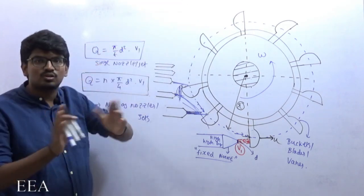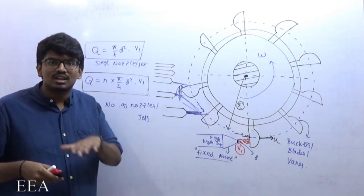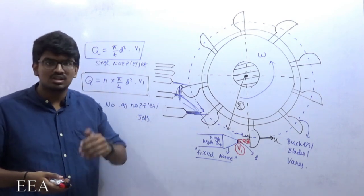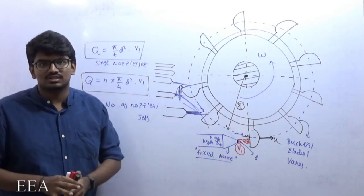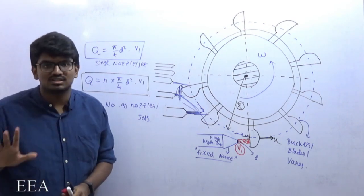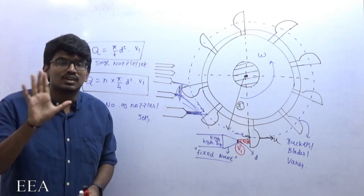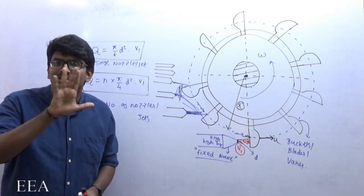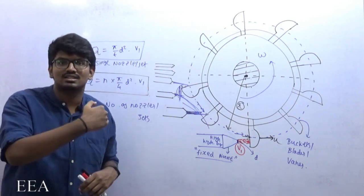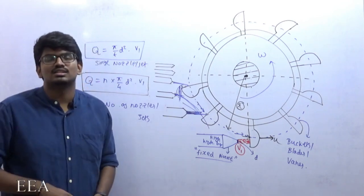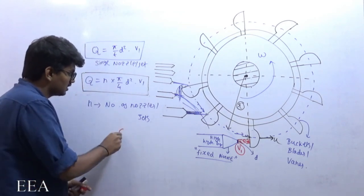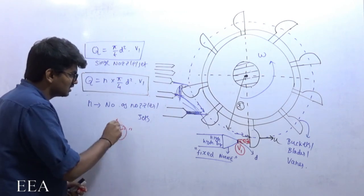Generally the number will be 4 to 6. Most predominantly, if it is a horizontal case of Pelton wheel, I will be using 2 nozzles. If it is a vertical case, I will be using between 4 and 6, but not more than 6. If I use more than 6, the jet from one nozzle will restrict the jet from another nozzle. So the maximum number of nozzles is 6.